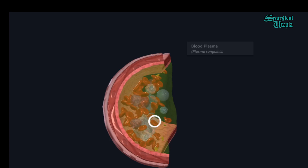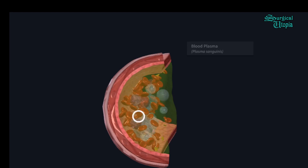The first plasma protein is albumin, and its role is to prevent water from diffusing outside the bloodstream into the extracellular matrix. The second is fibrinogen, which makes up the largest amount of protein in the plasma and is responsible for blood clotting. The third protein is the globulins.